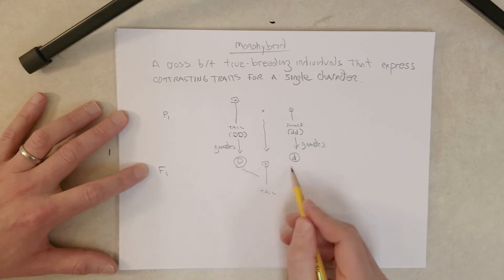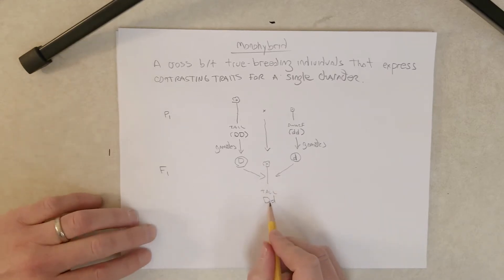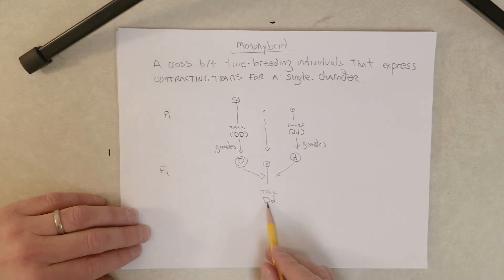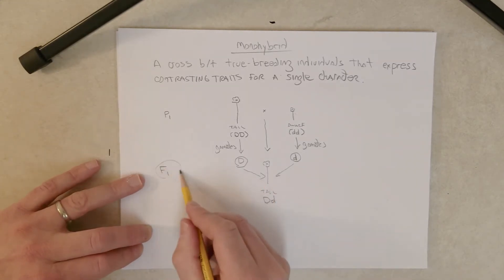So when these come together by fertilization, all of the offspring have this genotype: heterozygous big D little d. And we already said that the big D is dominant to the little d, so they all have the tall phenotype, and again we call this the F1 generation.